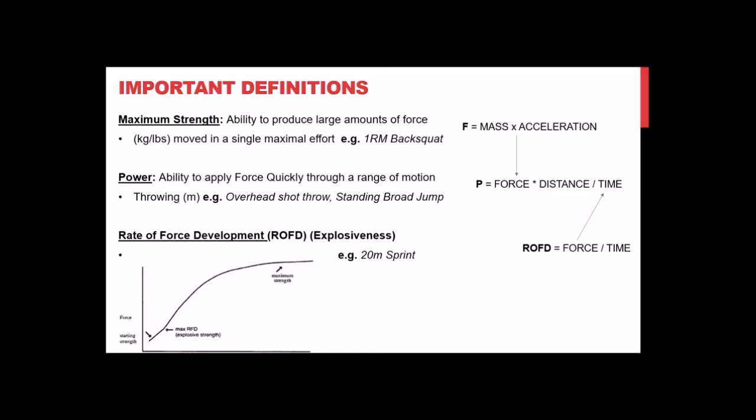In the weight room, we have a spectrum of things to consider. Ballistic, fast movements focus on applying force in short periods of time to enhance power. Slower movements with more mass and load influence the total amount of force you can produce. We can affect power in different ways with different types of exercises, emphasized at different times of year and with different event groups.